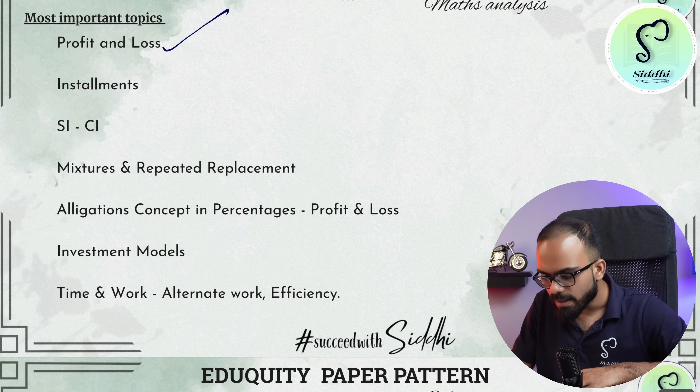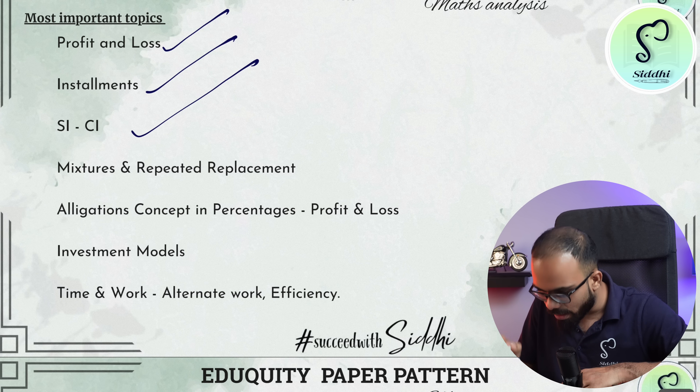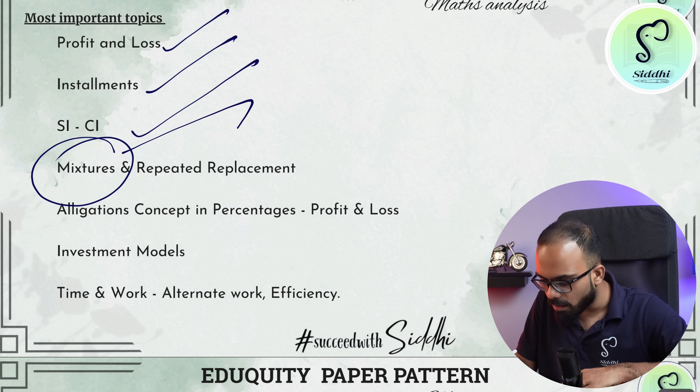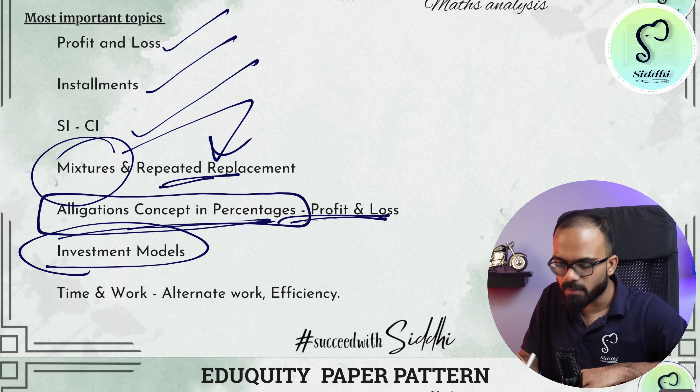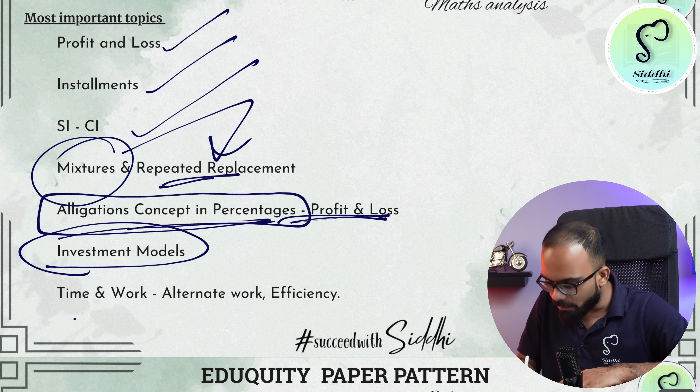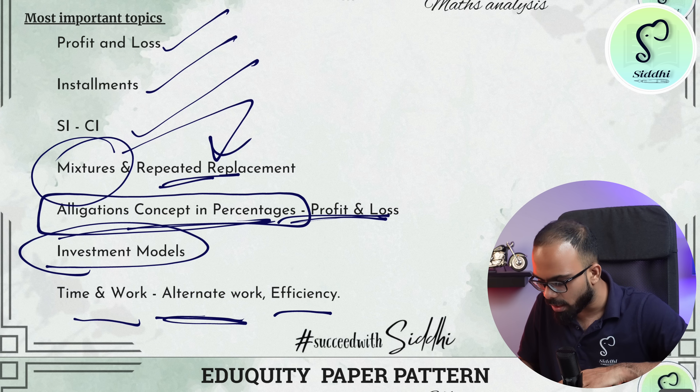Once you are good at all of advanced math, then revise arithmetic. In arithmetic, focus on profit and loss, then installments, SI/CI questions, repeated replacement questions in mixtures, allegation concept in percentages and profit and loss, and investment models — where the percentage variation of partners is being changed with difficult numbers. In time and work, there are questions on alternate work and efficiency.